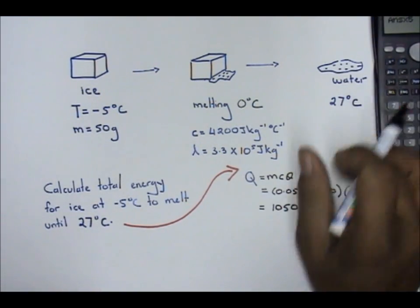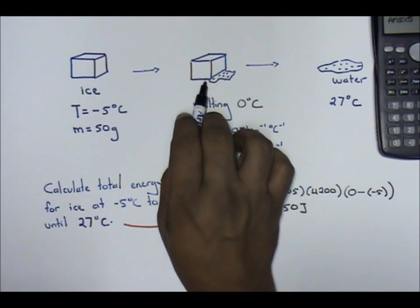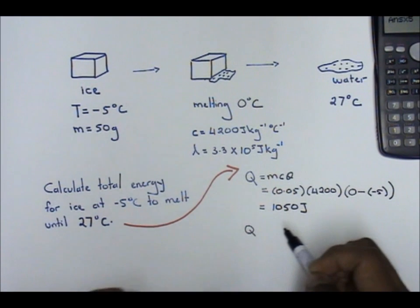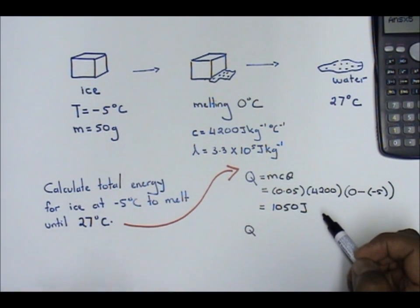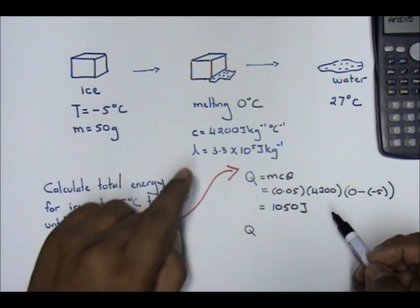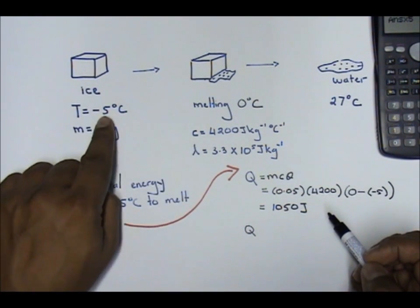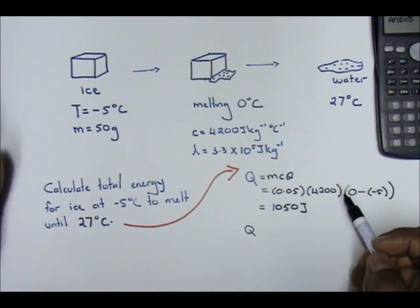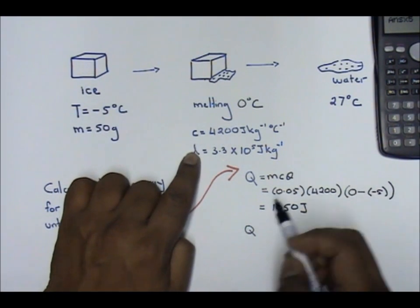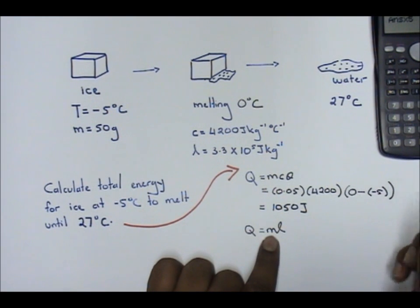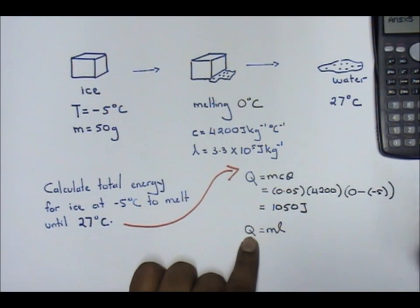Next, ice is about to melt. From solid to liquid, when it involves a change in the state of matter, that is your latent heat. C does not involve change in the state of matter, just from negative 5 to 0 how much heat is absorbed. L involves the change in state of matter. So that means Q equals to ML, asking how much energy it needs for the ice to melt.